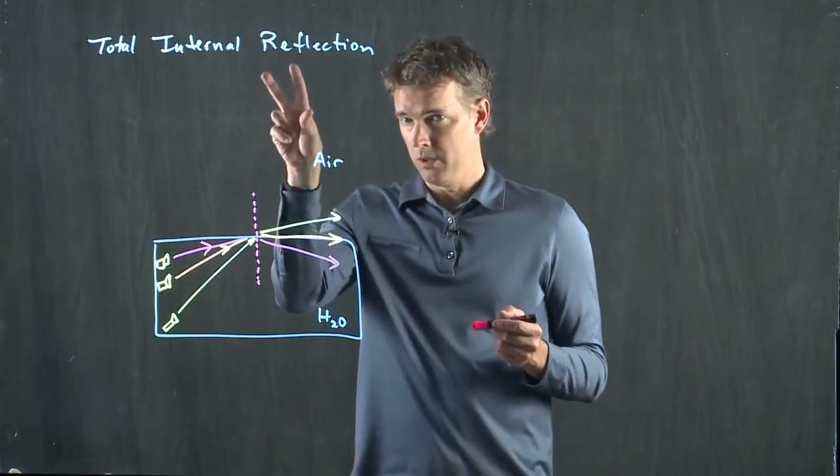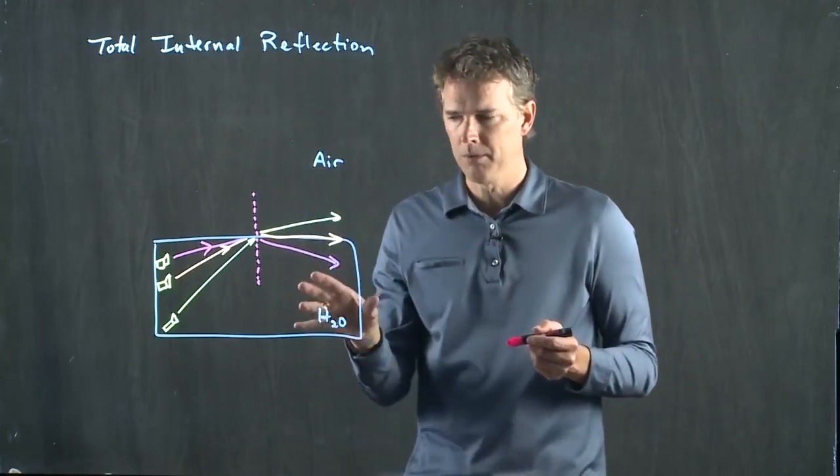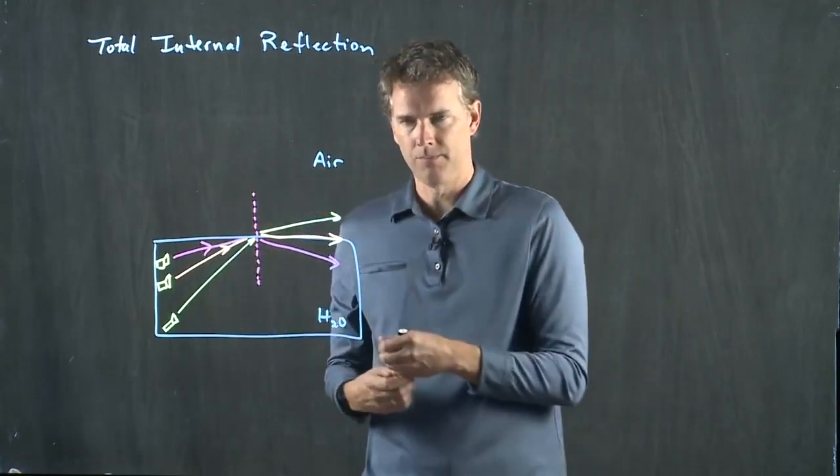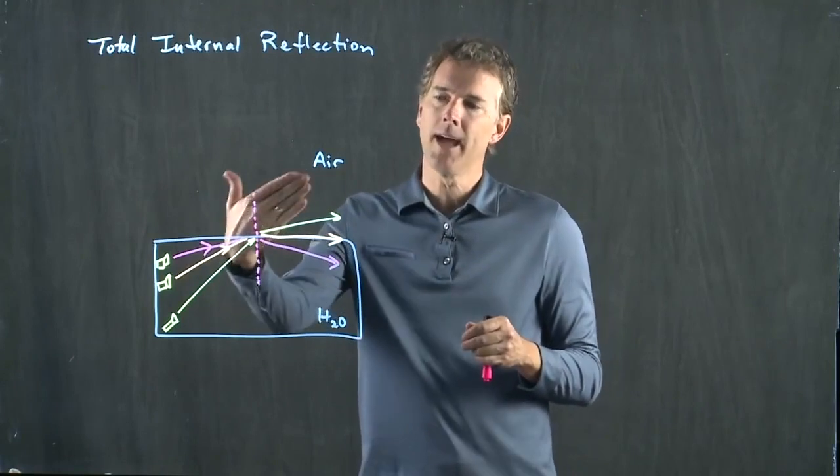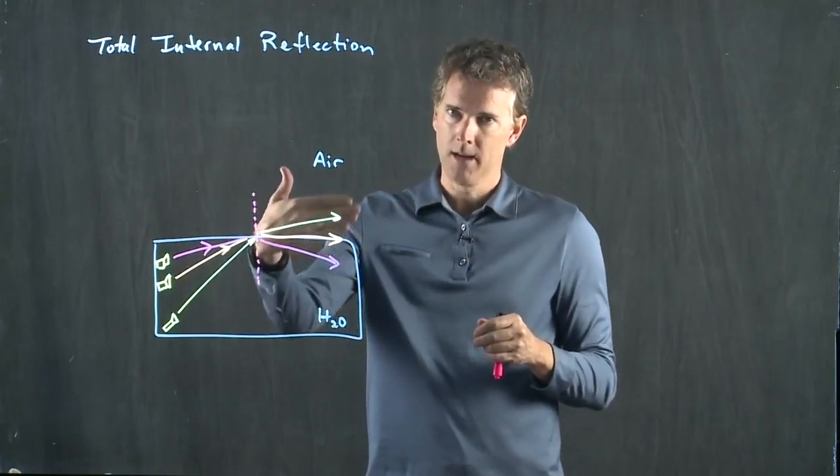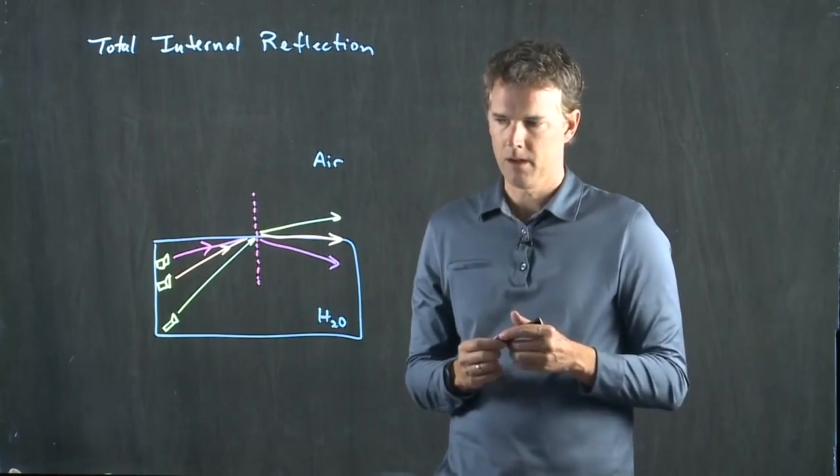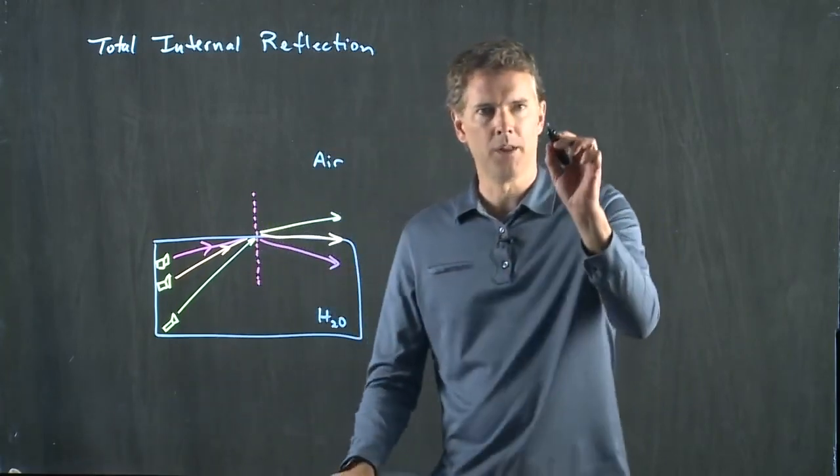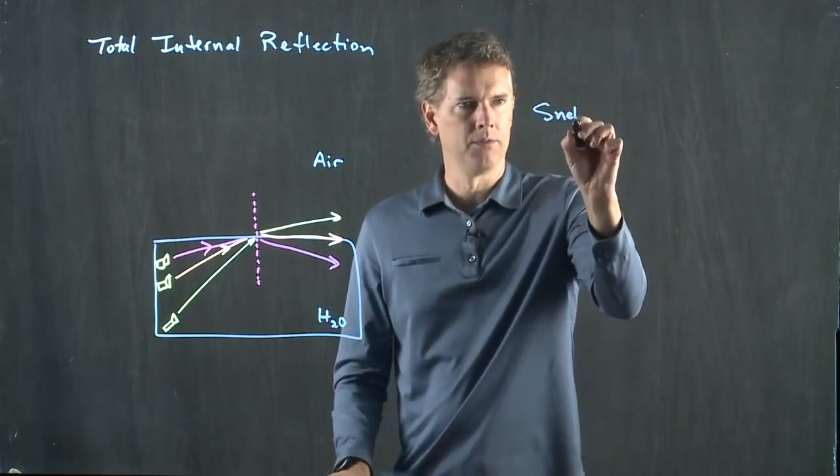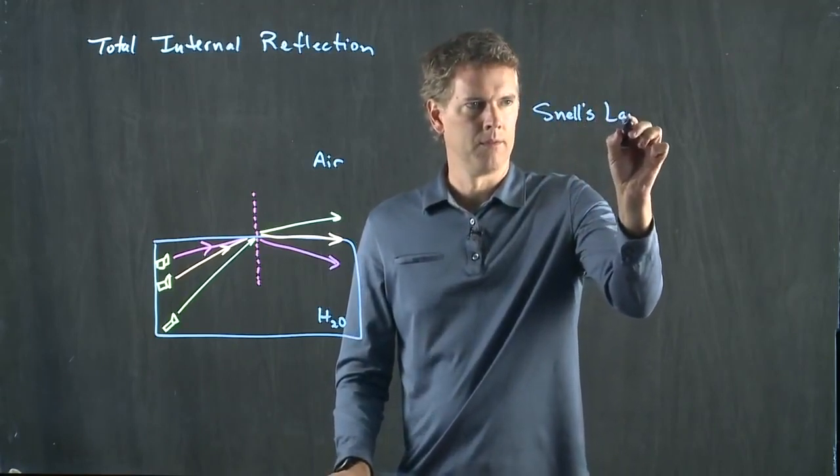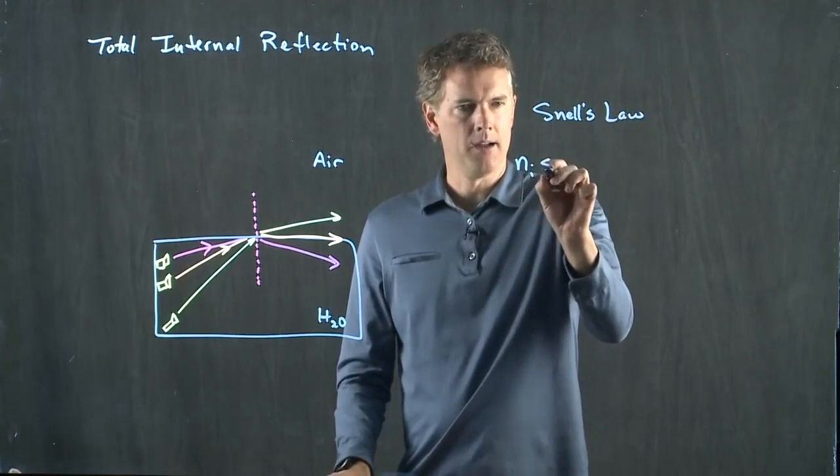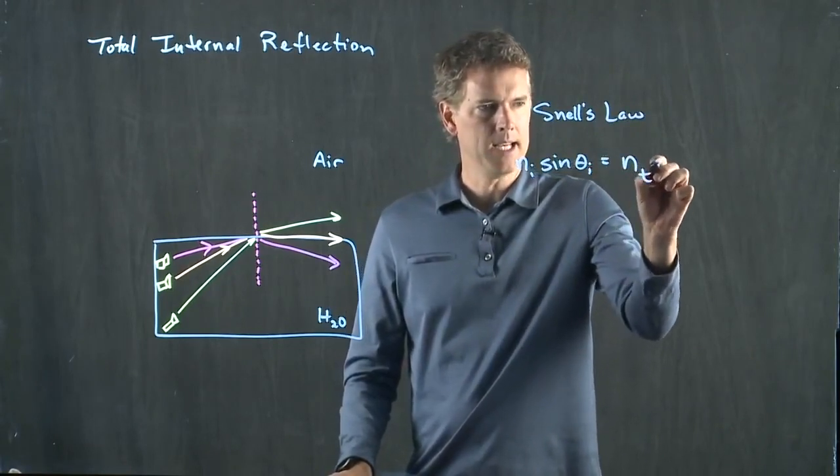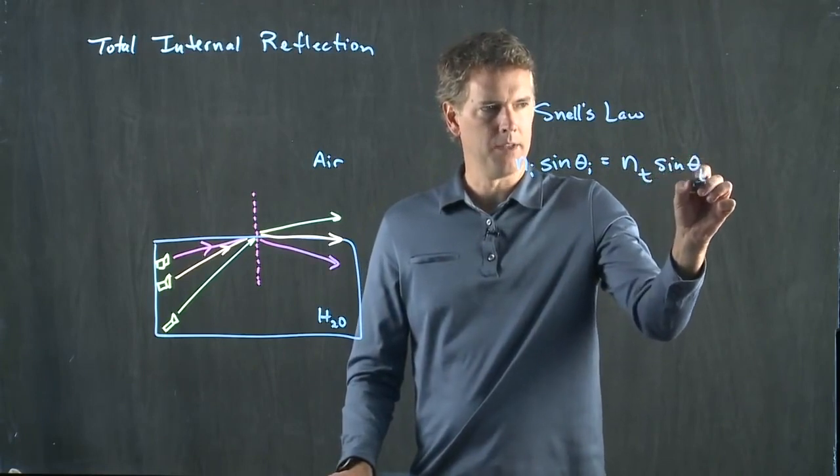Now, total internal reflection only happens when you go from high index to low index, and it happens when that transmitted ray equals 90 degrees. So let's see if we can write this out mathematically. We know that Snell's Law holds: Ni sine theta i equals nt sine of theta t.